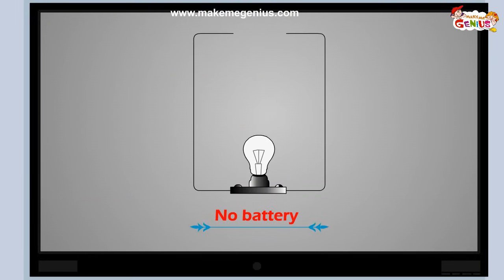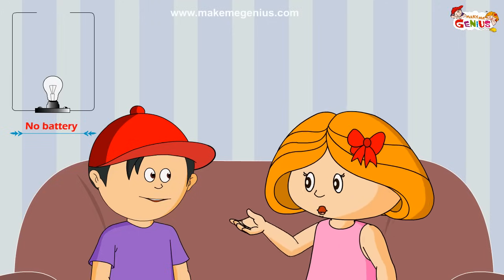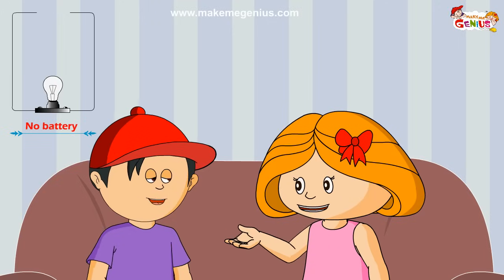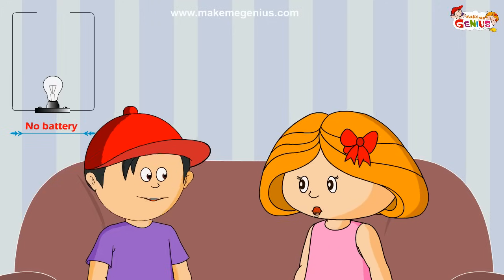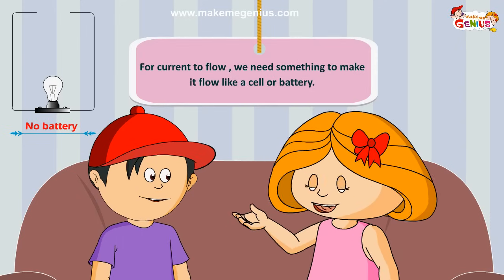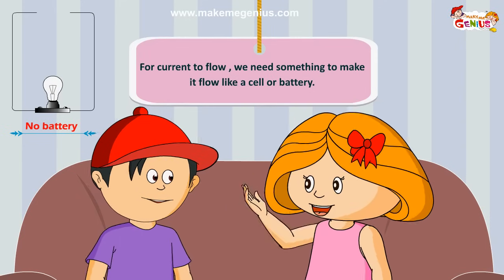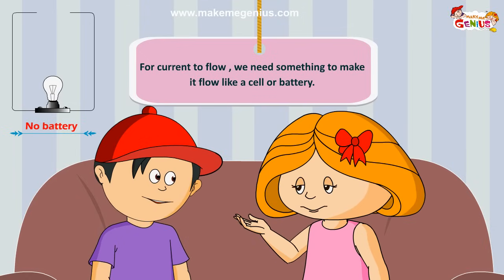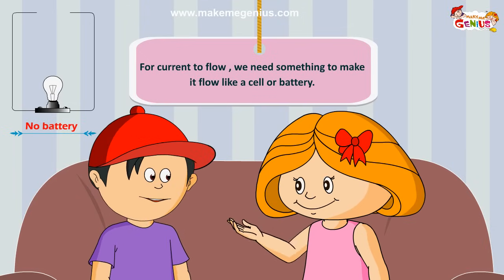Now look at this. There is no battery in this. If there is no battery, no electricity will flow. So the first condition for the flow of electricity in a circuit is that there should be something to make the electrons flow.